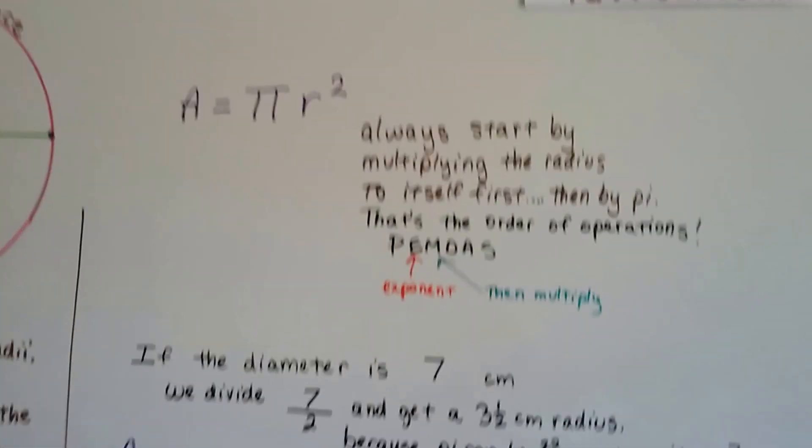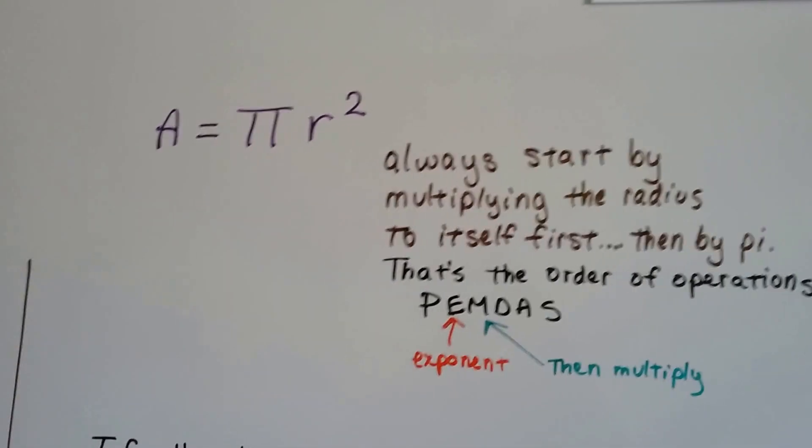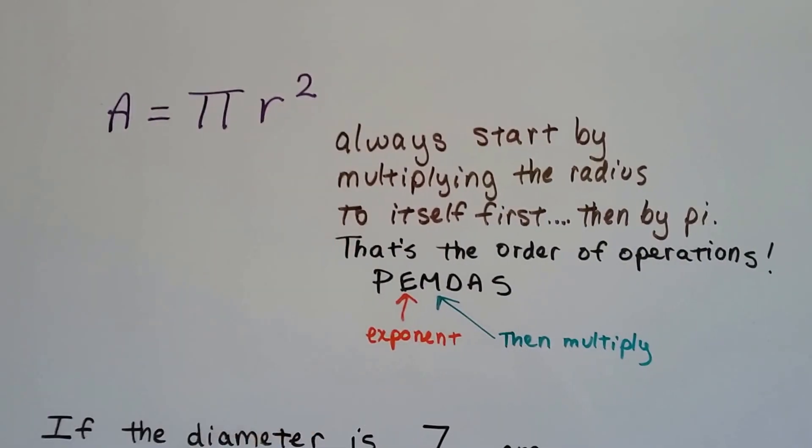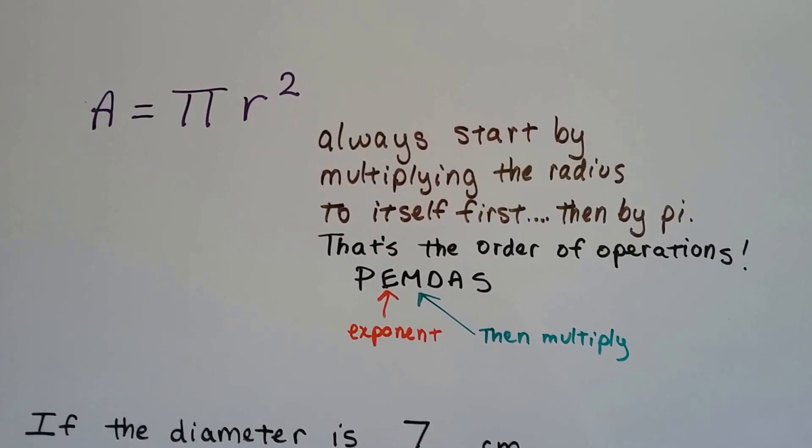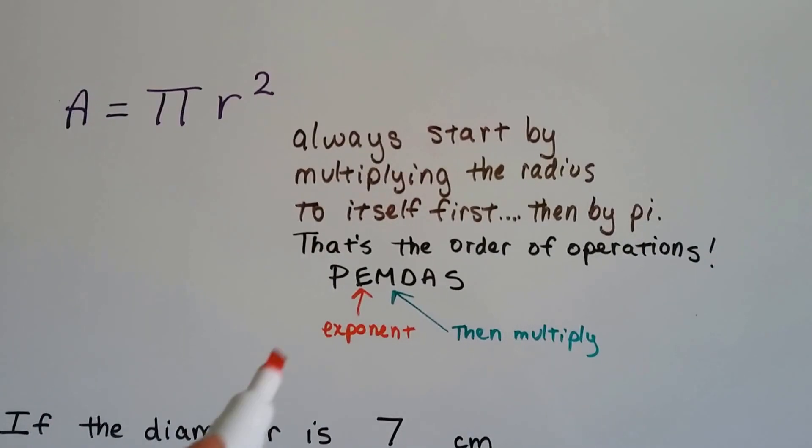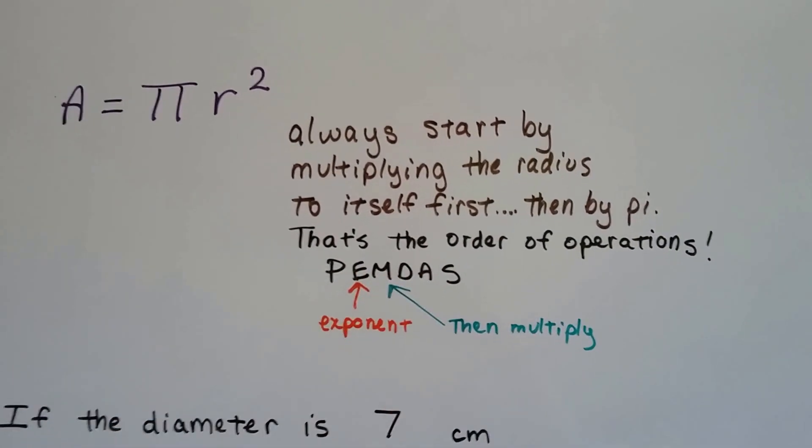Alright, so the formula for the area of a circle is area equals pi r squared. We always start by multiplying the radius to itself first, then by pi. That's the order of operations. It says we do exponents, then we multiply.